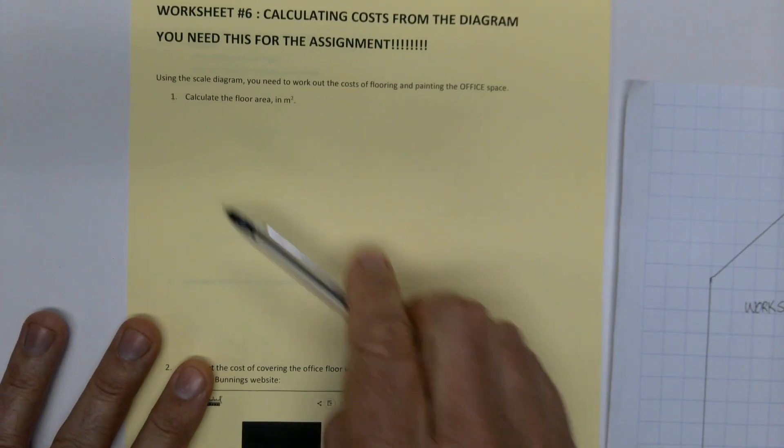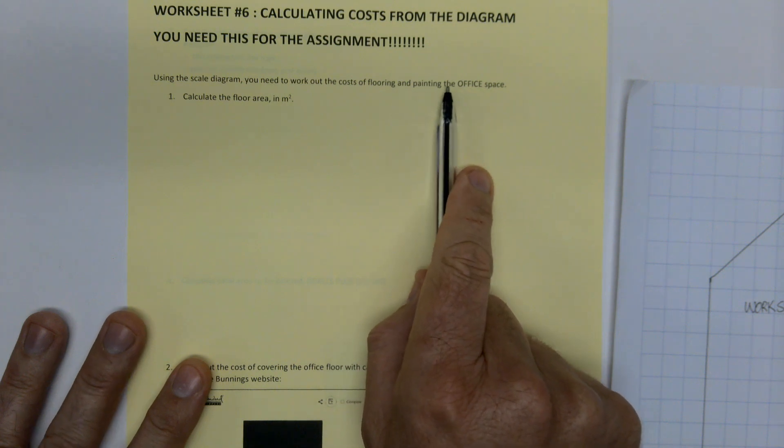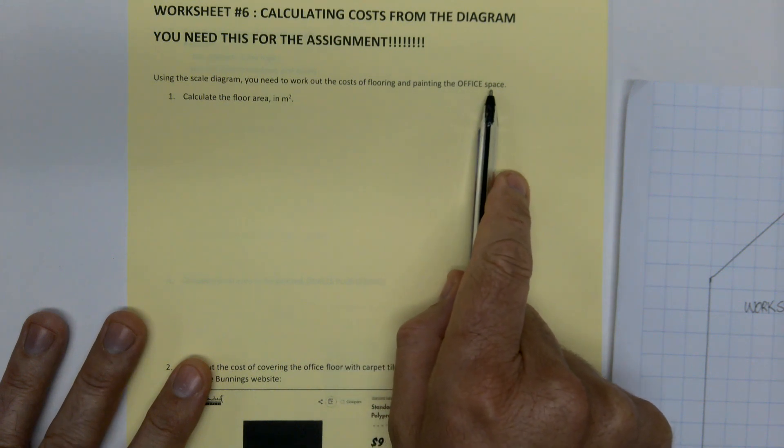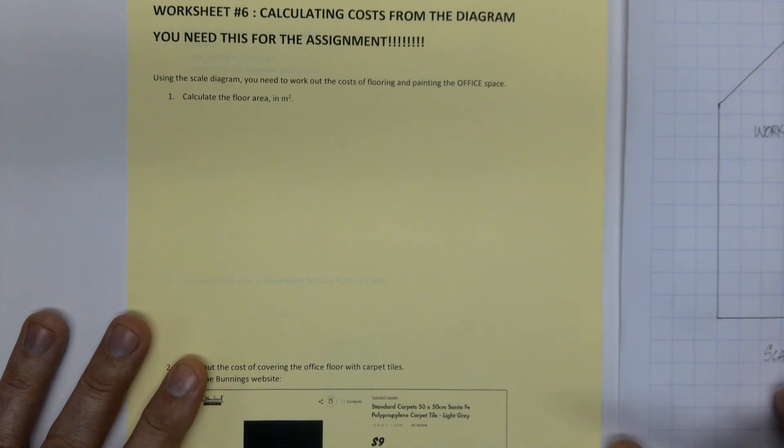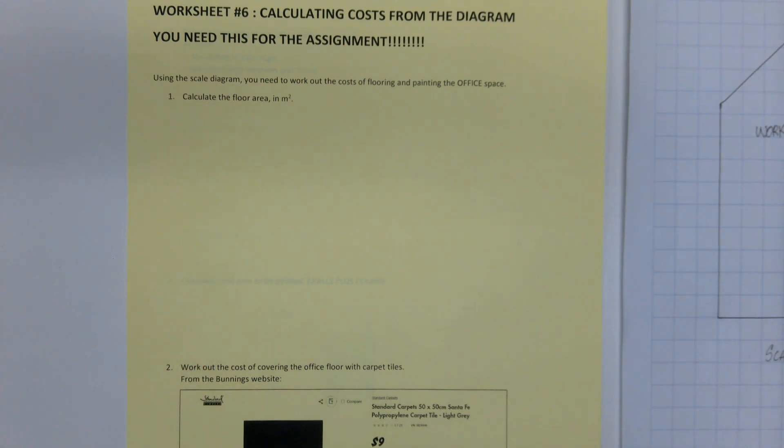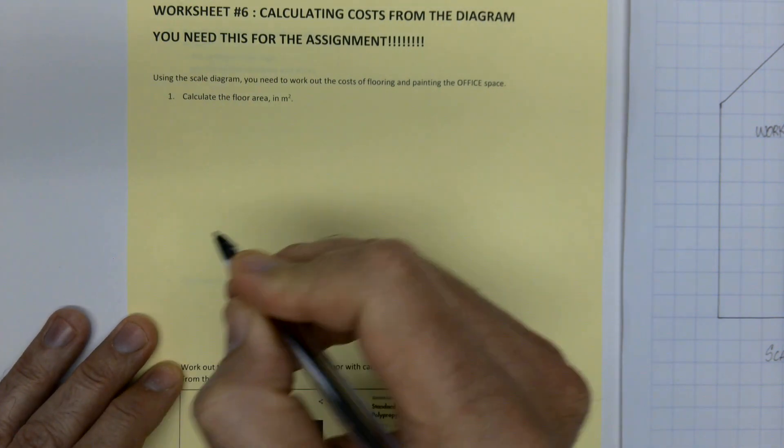So if you look over here, it says using the scale diagram, you need to work out the cost of flooring and painting the office space, just the office space. So calculate the floor area in meters squared. So the first thing you do, and you're going to do this for the assignment, you're going to actually do this what I'm doing here in your template.